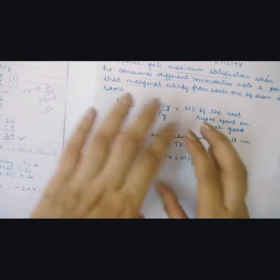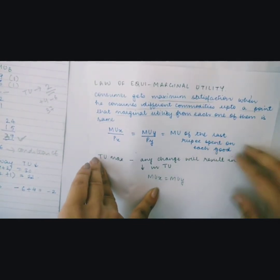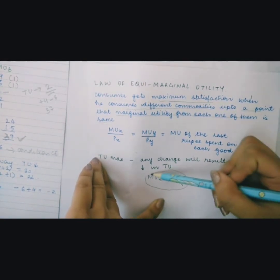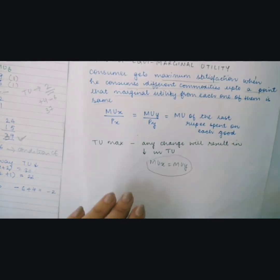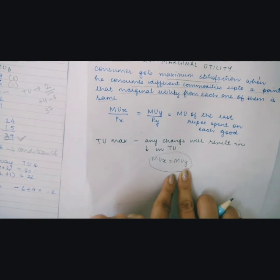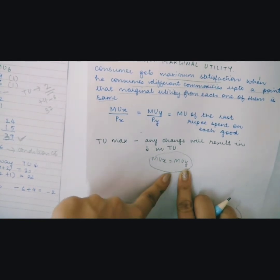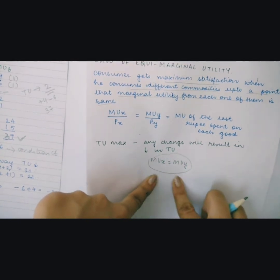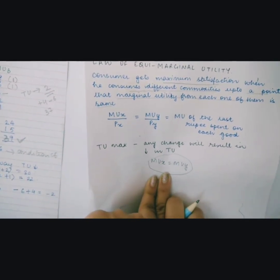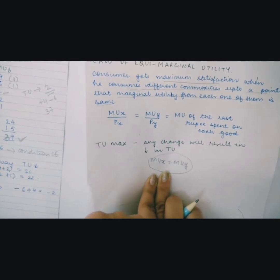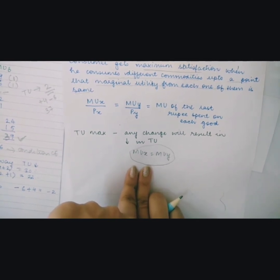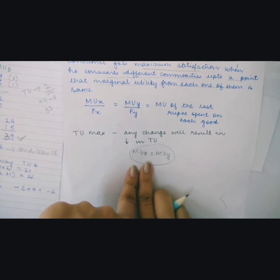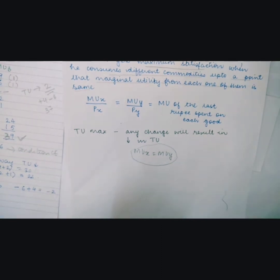To repeat: the law of equimarginal utility states that the marginal utility from commodity A should be equal to the marginal utility of commodity B. If this condition is satisfied, the consumer will maximize his total utility; if not, total utility will fall. In the next video, we will cover the concept of budget line and indifference curve, and find out consumer equilibrium using the indifference curve method.